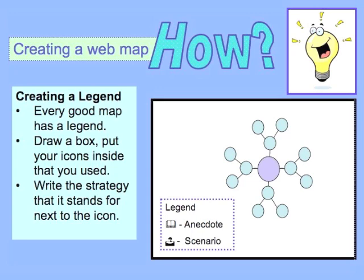Every good map has a legend. At the bottom of your paper, on the left or the right side, draw a box and label it legend. Inside that box, you're going to draw the icons that you used for strategies in your web map, and then label them. Good job!